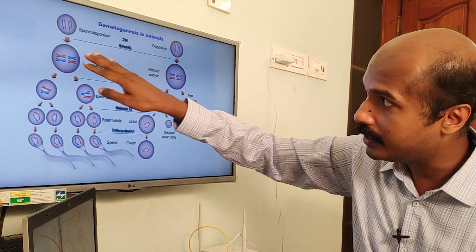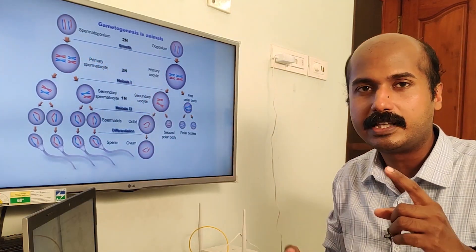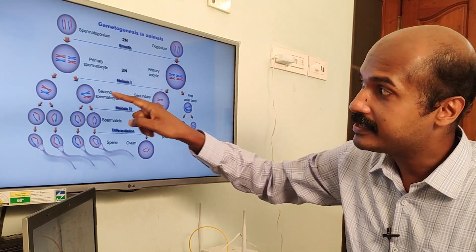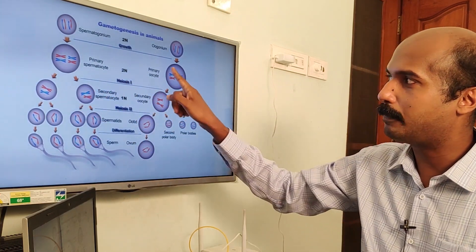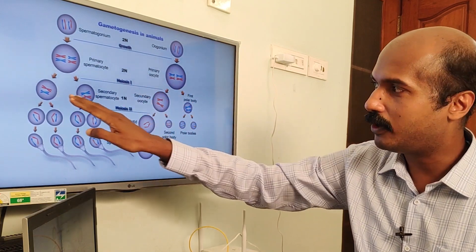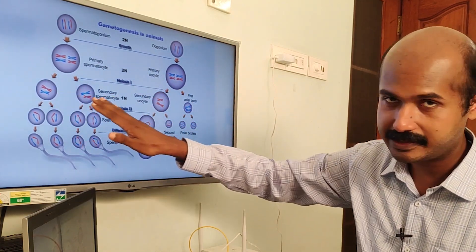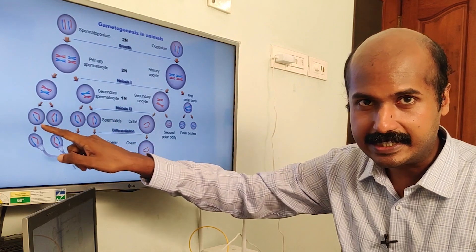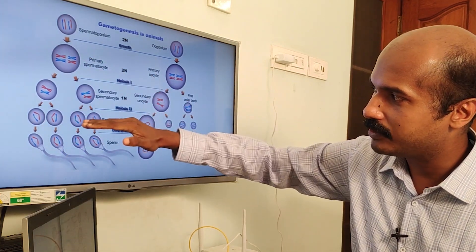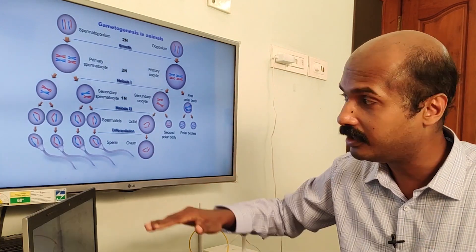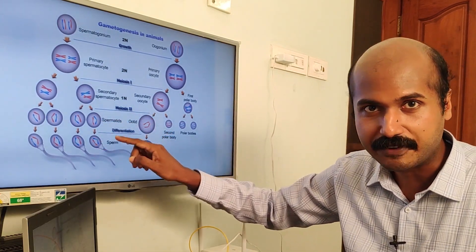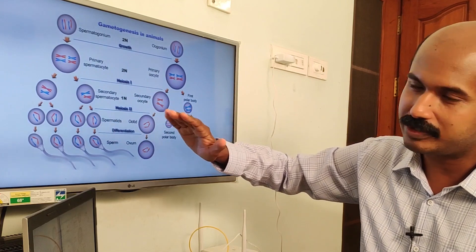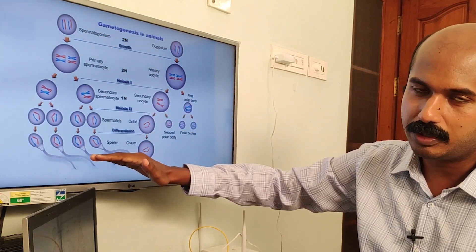The primordial germ cell undergoes repeated division to form spermatogonium, which then undergoes mitosis, growth, and further mitosis to form the primary spermatocyte. The primary spermatocyte undergoes meiosis I to form the secondary spermatocyte, and the secondary spermatocyte undergoes meiosis II to form spermatids. The spermatid does not divide further but undergoes structural and functional maturation to form spermatozoa.